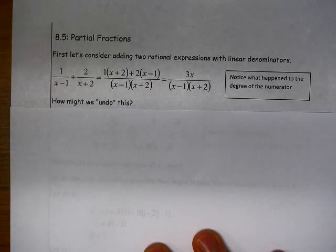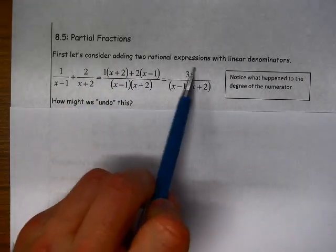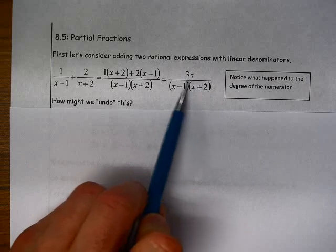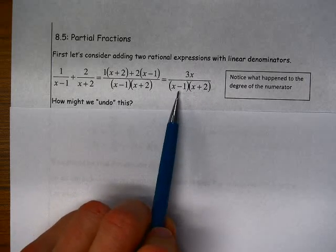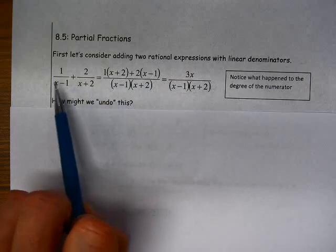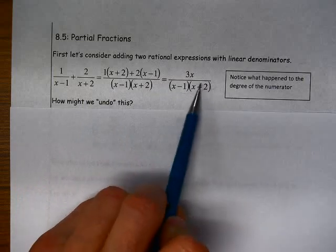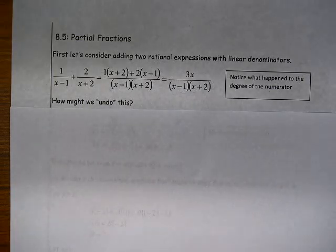So what we're going to talk about in terms of partial fractions is kind of reversing that process. Starting with a quadratic denominator and breaking that up into two different fractions, the partial fractions, that we could express as a sum that would still be equal to this original expression.